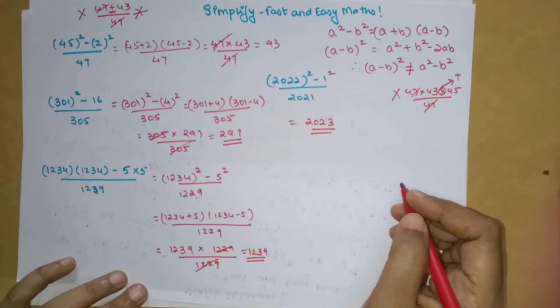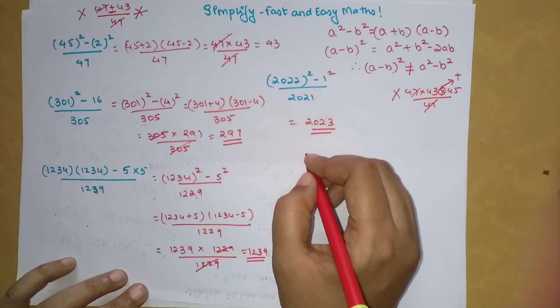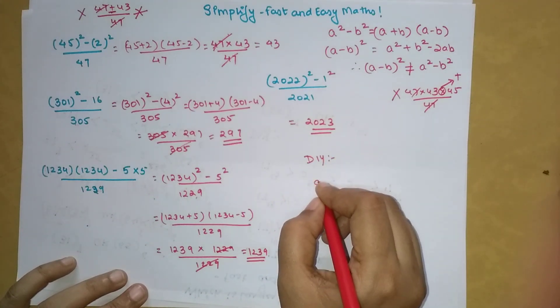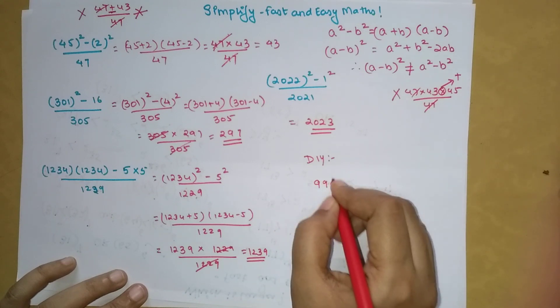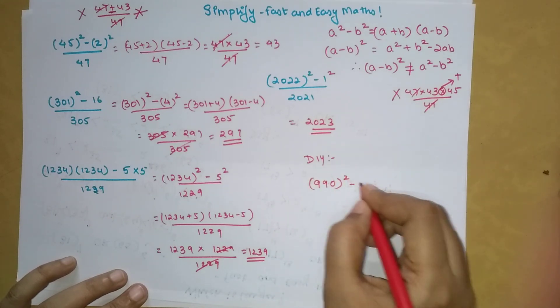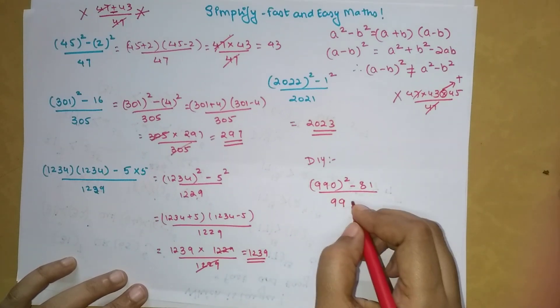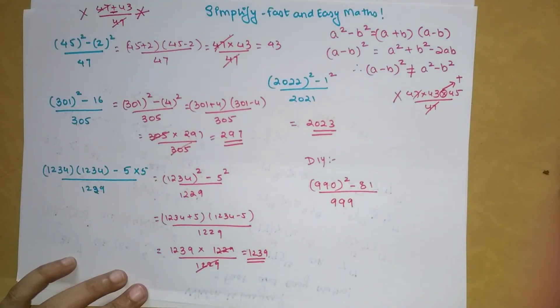You saw how easy this entire exercise became, right? So now time for your DIY. You will have to tell me 990 square minus 81 upon 999. Do let me know your answers in the comment section. So that's it for now. I will see you in the next video.